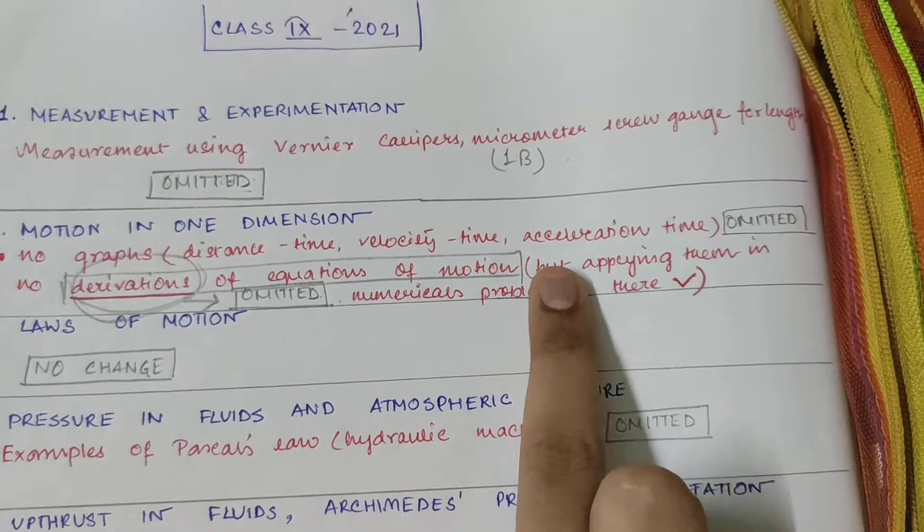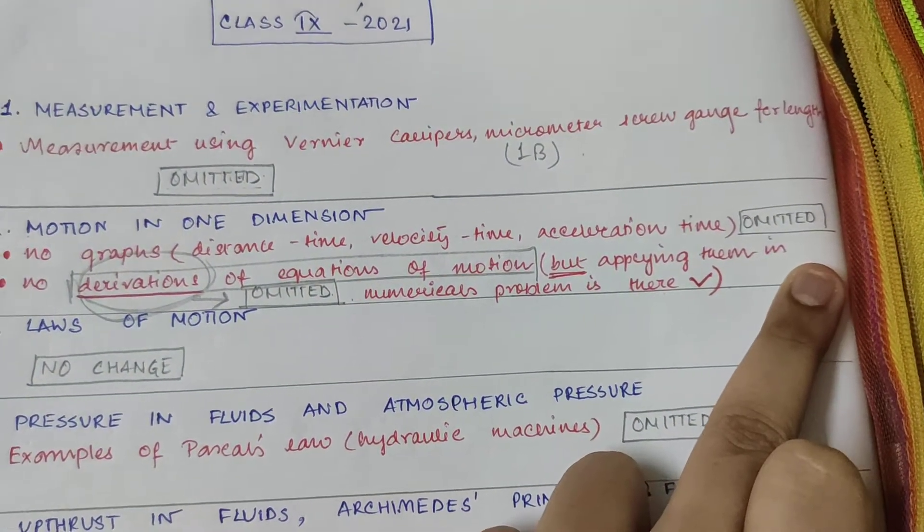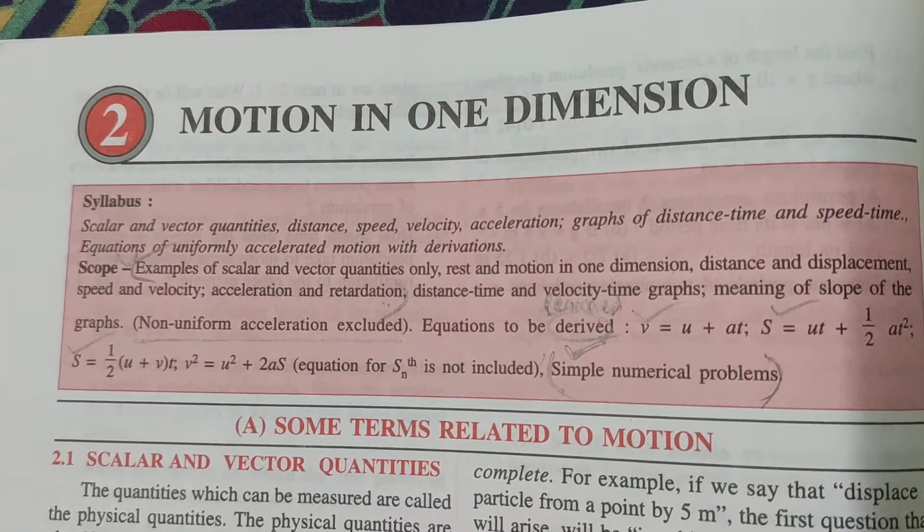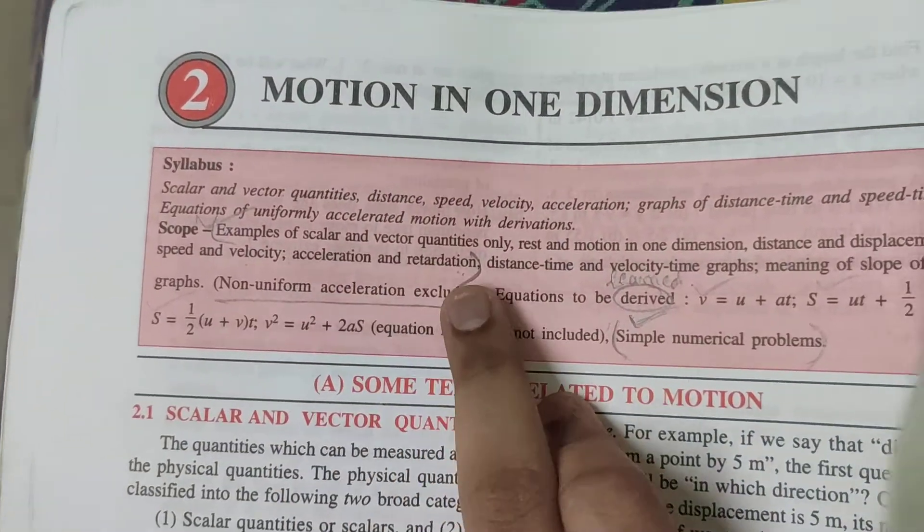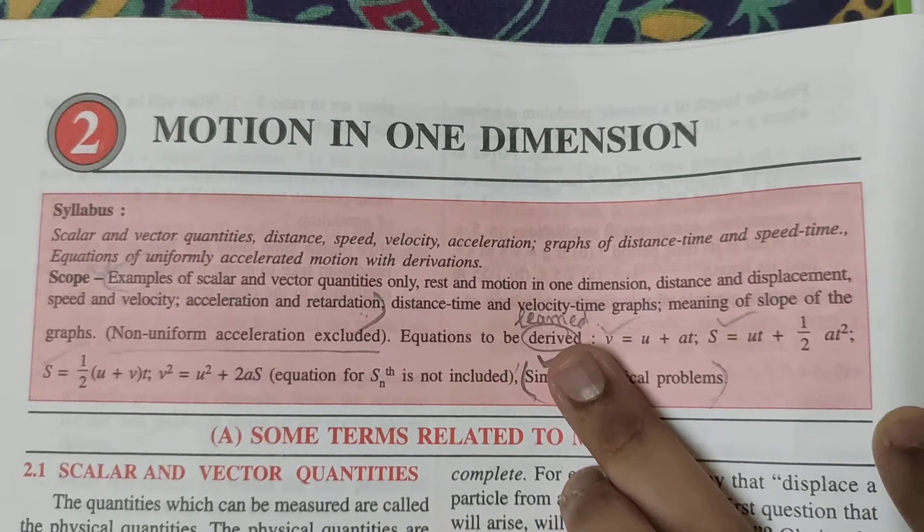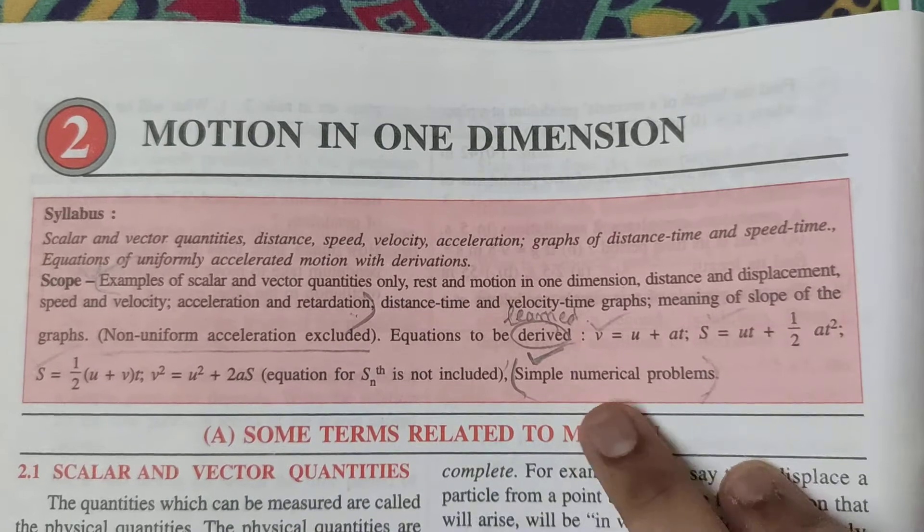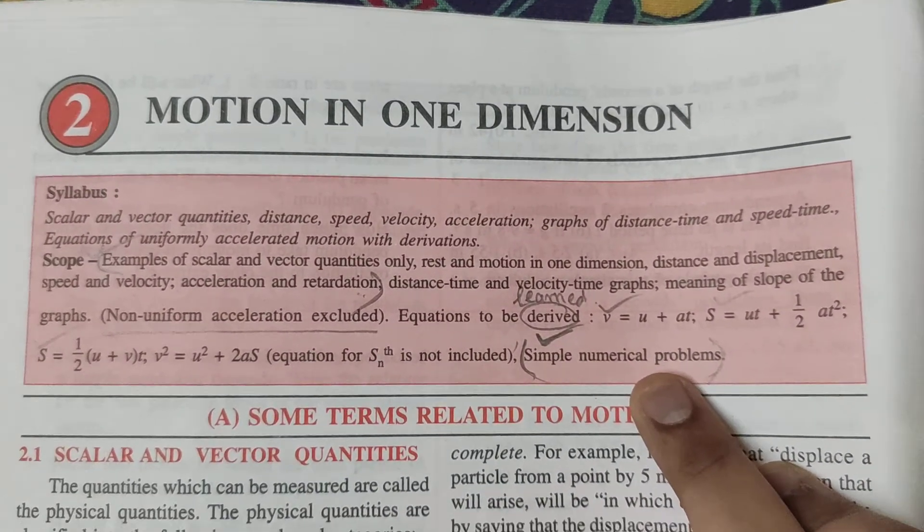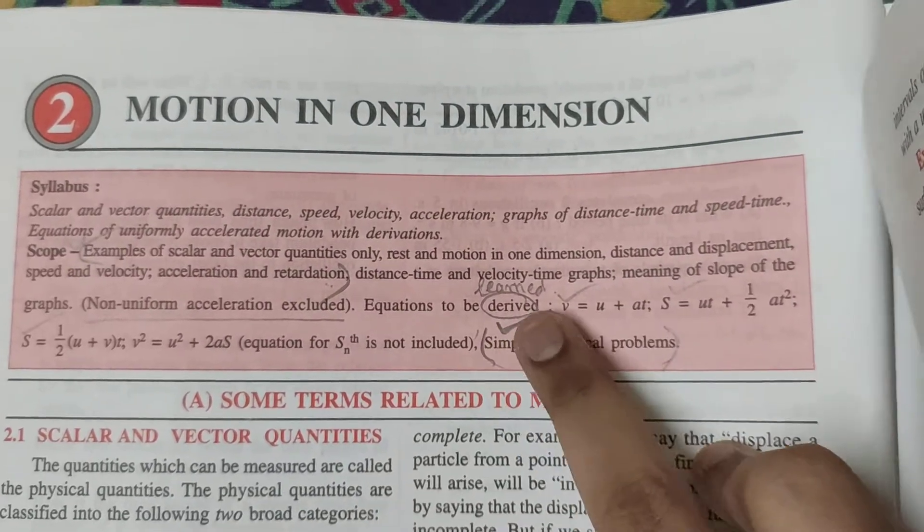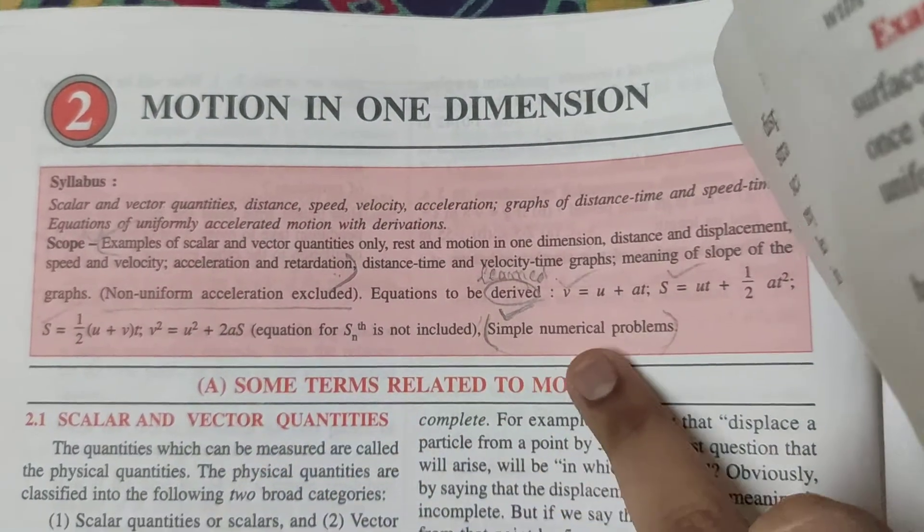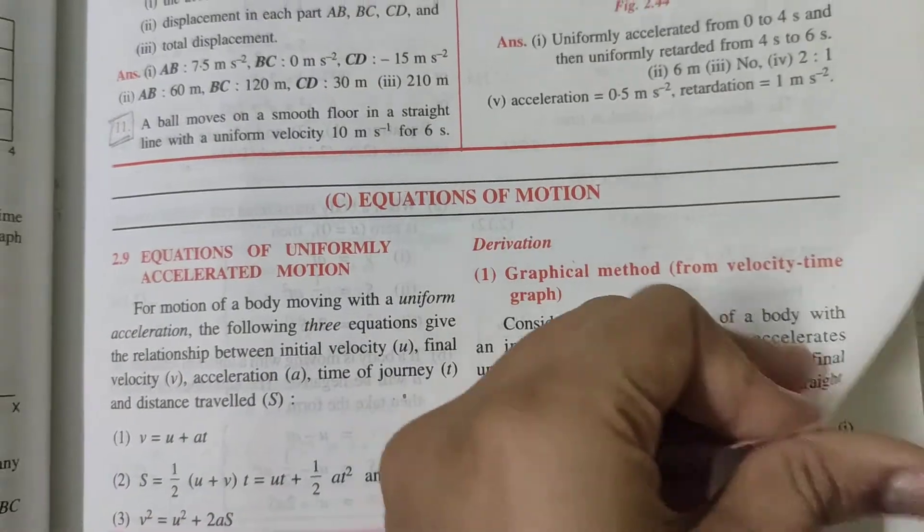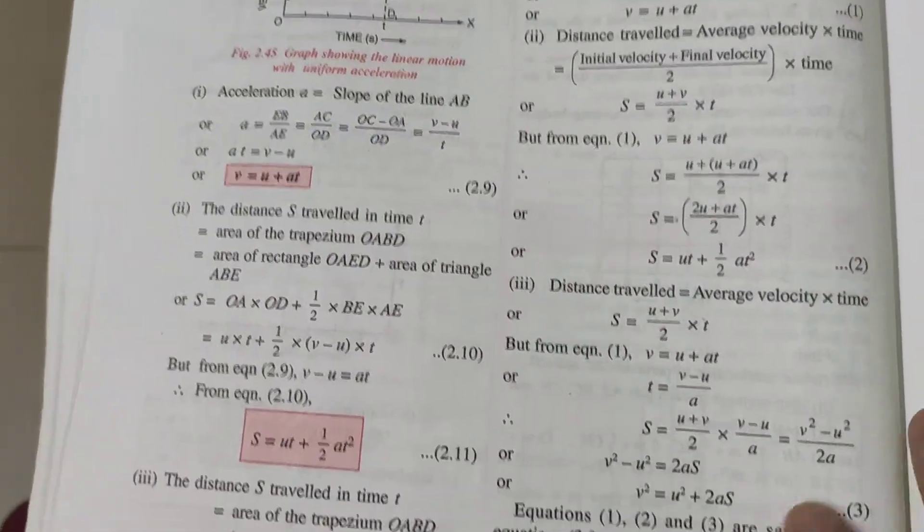But you have to learn the equations because in your syllabus you have learned the three equations of motion, because you will have to apply them in numerical problems also. So just see from 2 motion in one dimension you have till this, that means 2A. 2A you have. Again this time you have 2C also but equations to be learned not derived. These three equations you have to learn and simple numerical problems from there you have.